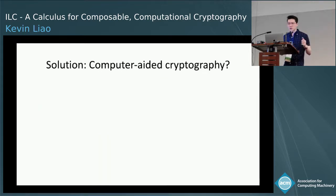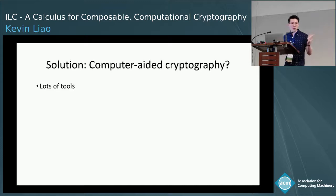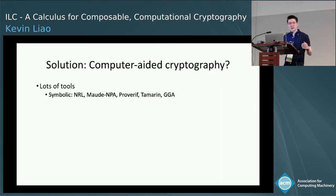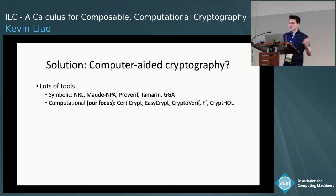There's an area called computer-aided cryptography that looks to address some of these issues. The idea is to get a computer to check our proofs for us. Tools usually fall into one of two camps: the symbolic model, where we take a high-level abstract view of protocols with a lot of automation, and the computational model, which is our focus — formalizing and mechanizing the low-level reasoning that cryptographers use when they write proofs.